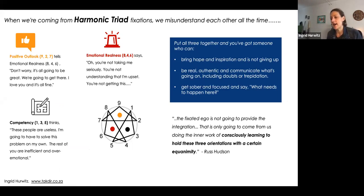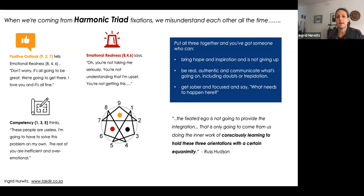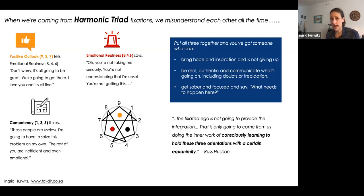The Harmonic triads are one of the places we run into major disharmony. When you discover what's in them today, you'll probably have realizations about how your relationships and collaborations have gone wrong in the past. The Positive Outlook type says 'don't worry, it's going to be fine, I love you, we've got a great team.' The Emotional Realness type reacts: 'Excuse me - you're not actually hearing me, there are real issues we need to deal with.'